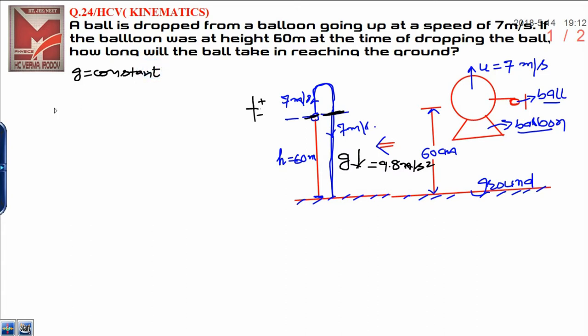That's why using the equation: h is equal to ut plus half gt squared. h means downward direction from the reference point. This is the reference point. That's why downward direction it will be negative. u, that is upward direction, that is positive. u is 7 into t plus half g is downward direction, that's why it is negative 9.8 into t square.